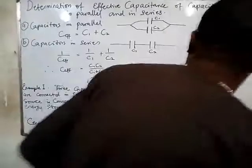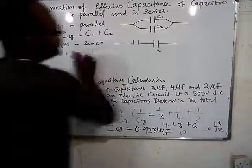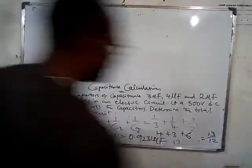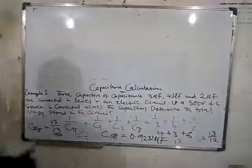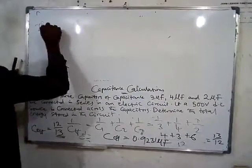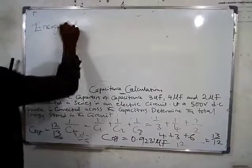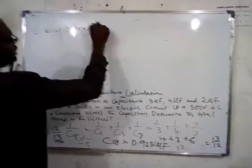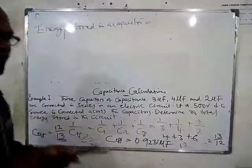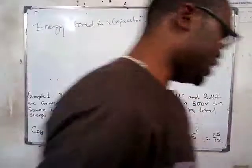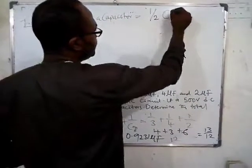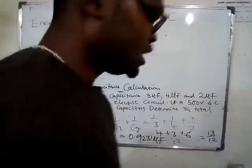Now we need to find the total energy stored. Check the formula: the energy stored in a capacitor equals half C V squared.